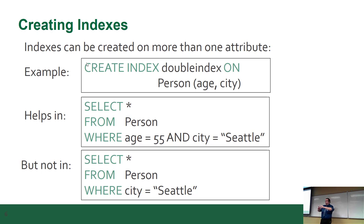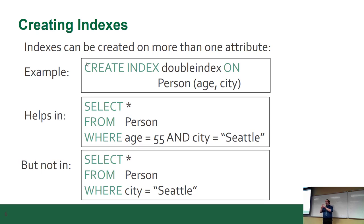What happens with the index is when you write a query, the index will help speed things up based on the WHERE clause. Whatever you put in your WHERE clause will be sped up by the index. In this example, SELECT * FROM persons WHERE age = 55 AND city = 'Seattle' — it'll hit that double index and be sped up because both columns are in that index. If you only query by city alone it won't help, because it doesn't match the combination.